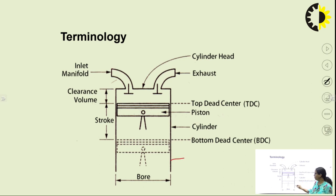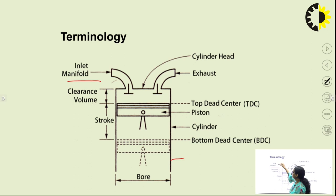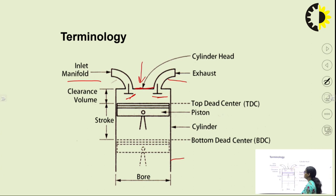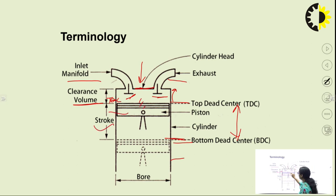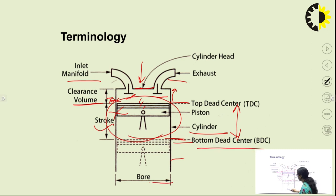A diagram is provided to explain all the terminology. In it you can see the inlet manifold, inlet valve, exhaust manifold, and the cylinder head where spark plug or fuel injectors are mounted. The clearance volume is shown above TDC. The distance between TDC and BDC is the stroke, with the piston and piston rings visible. The full block is the cylinder, and the bore is the inside diameter of the cylinder.